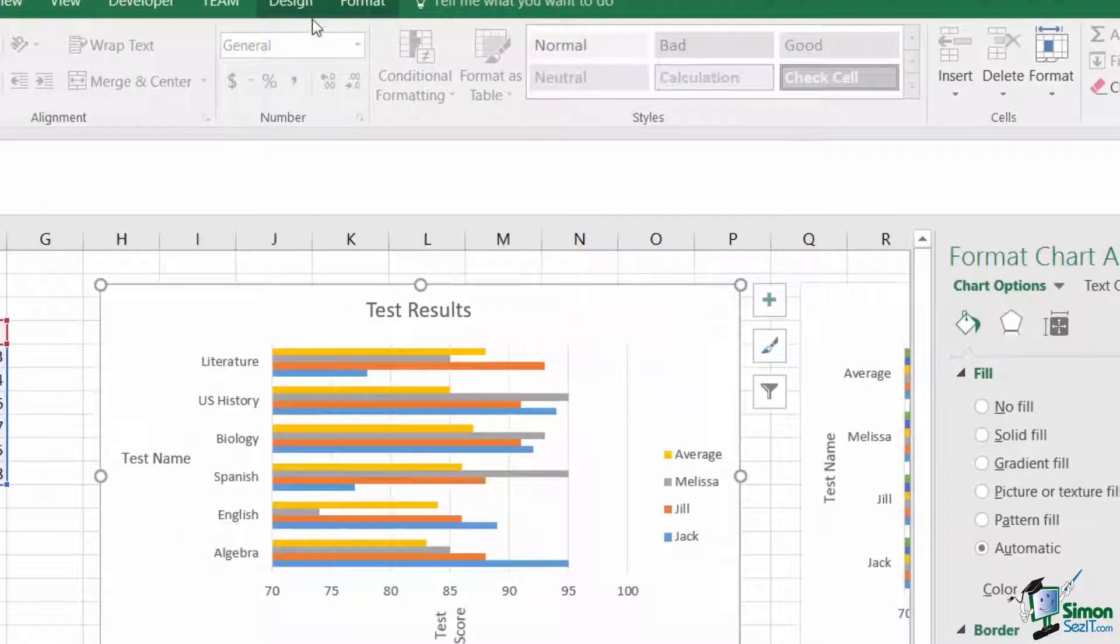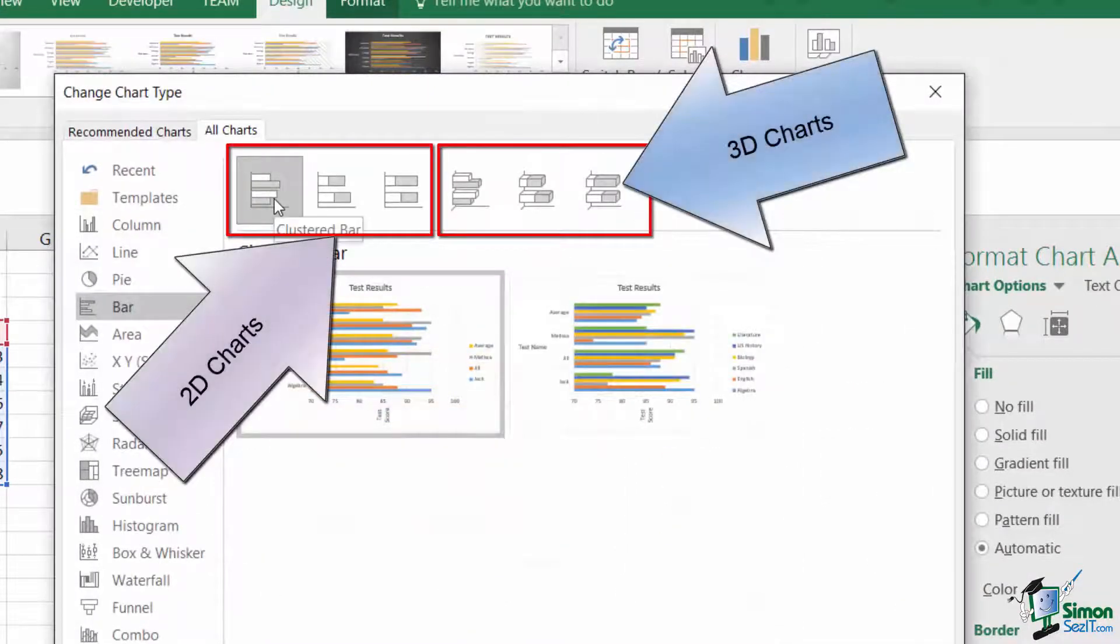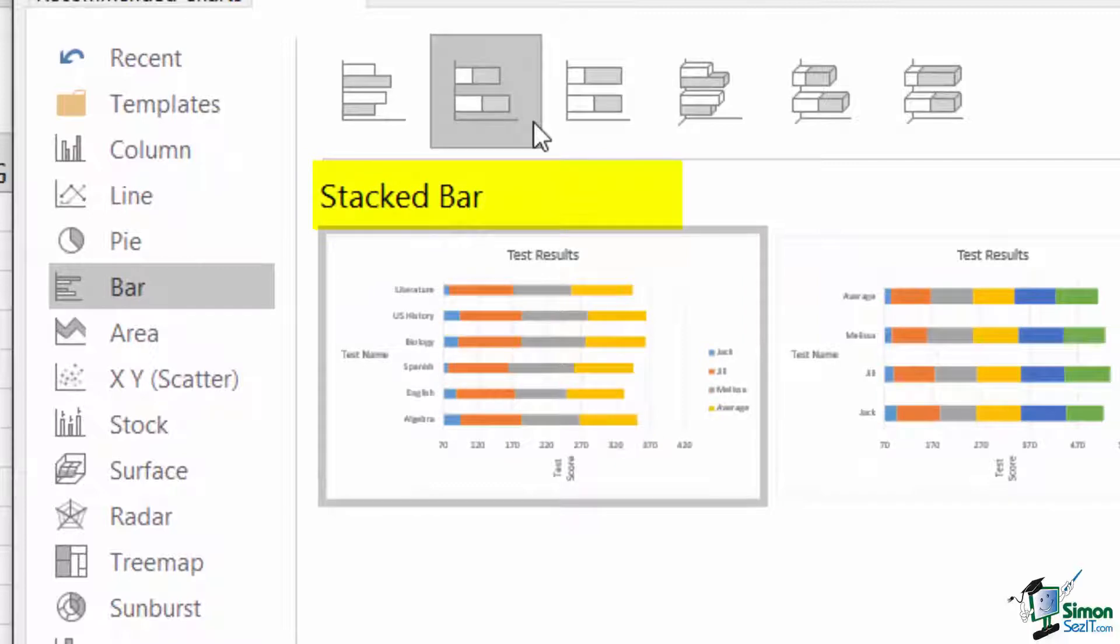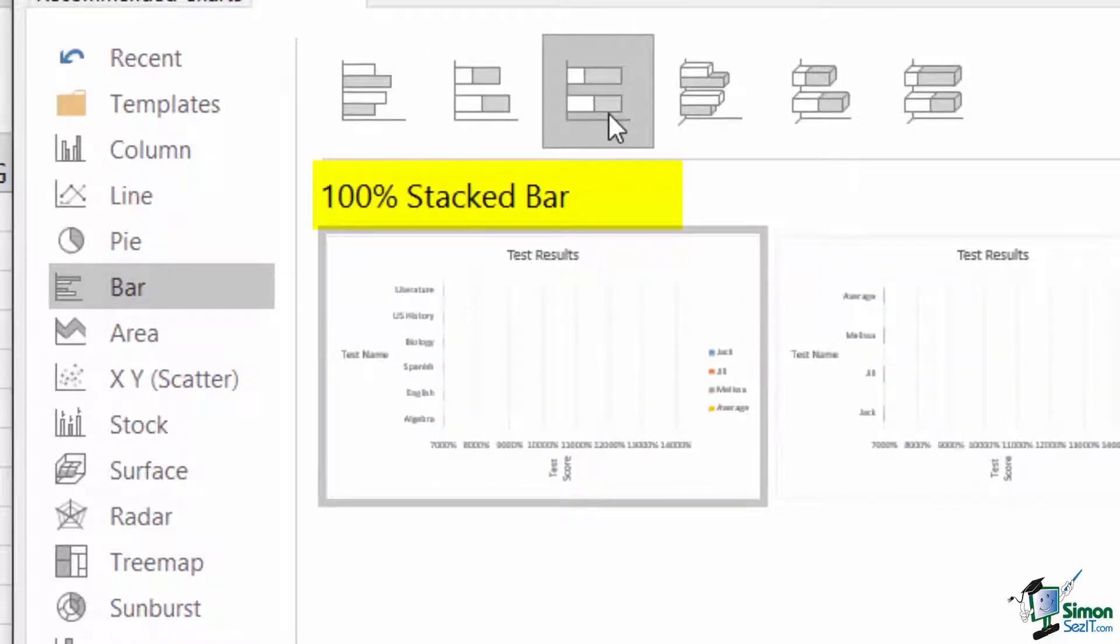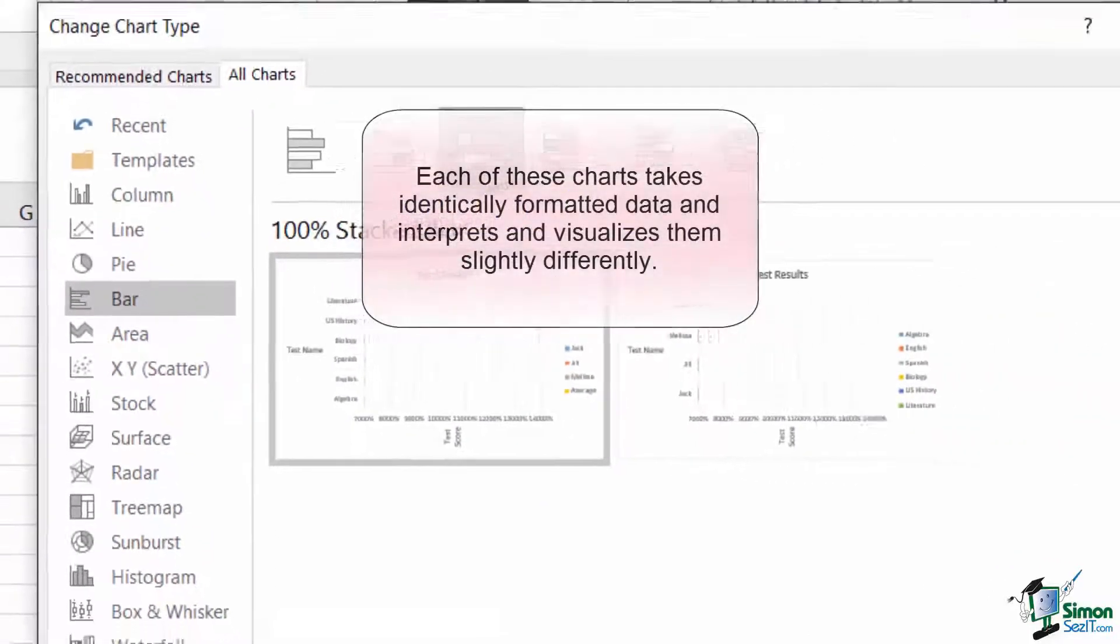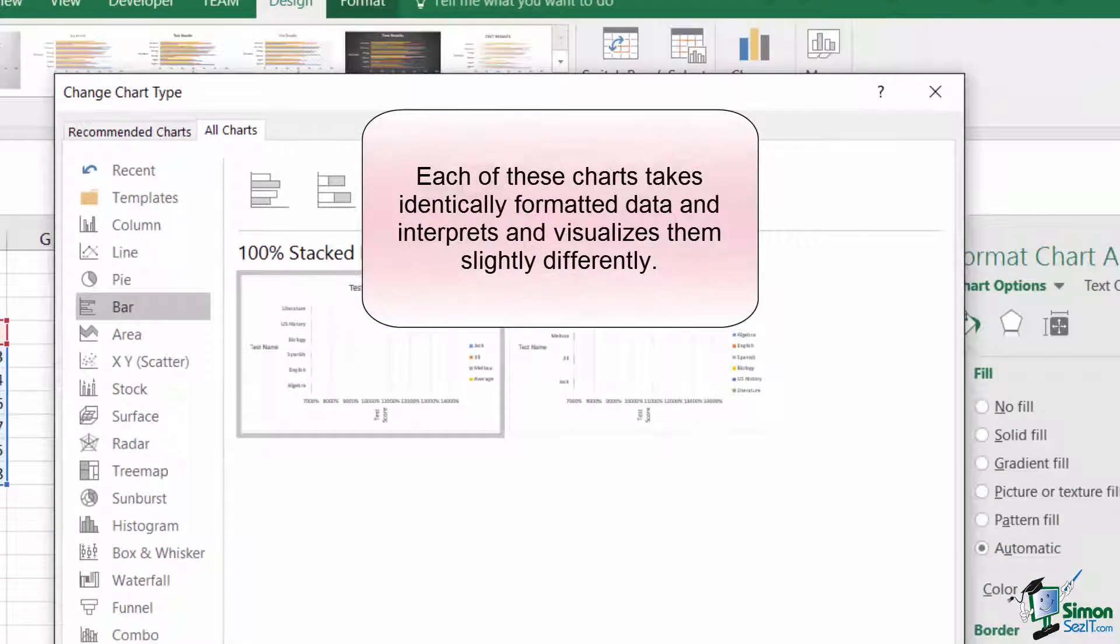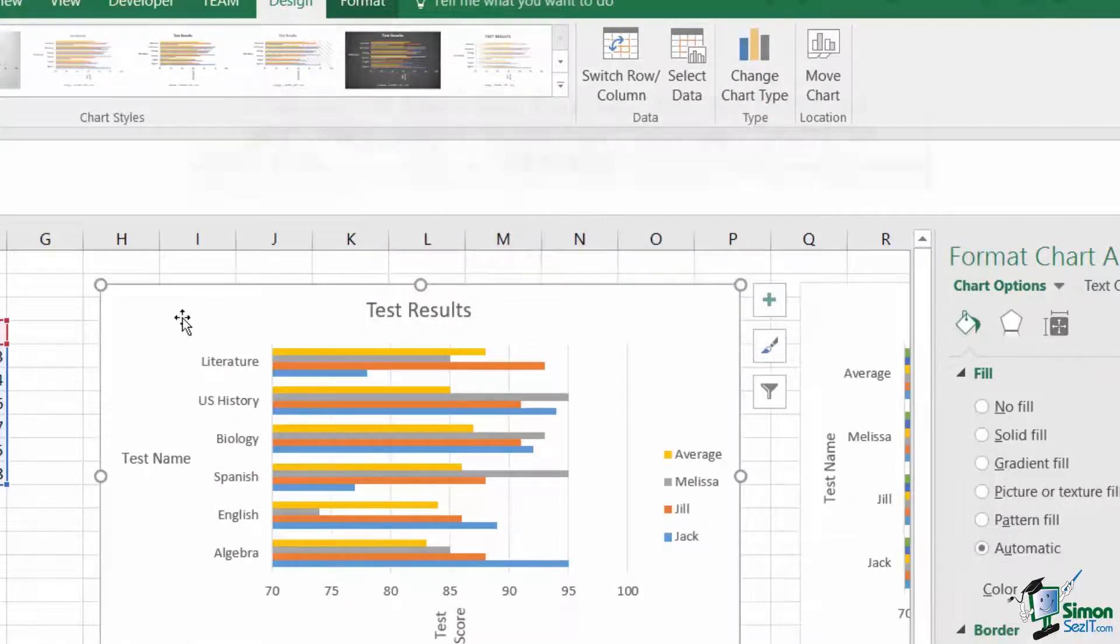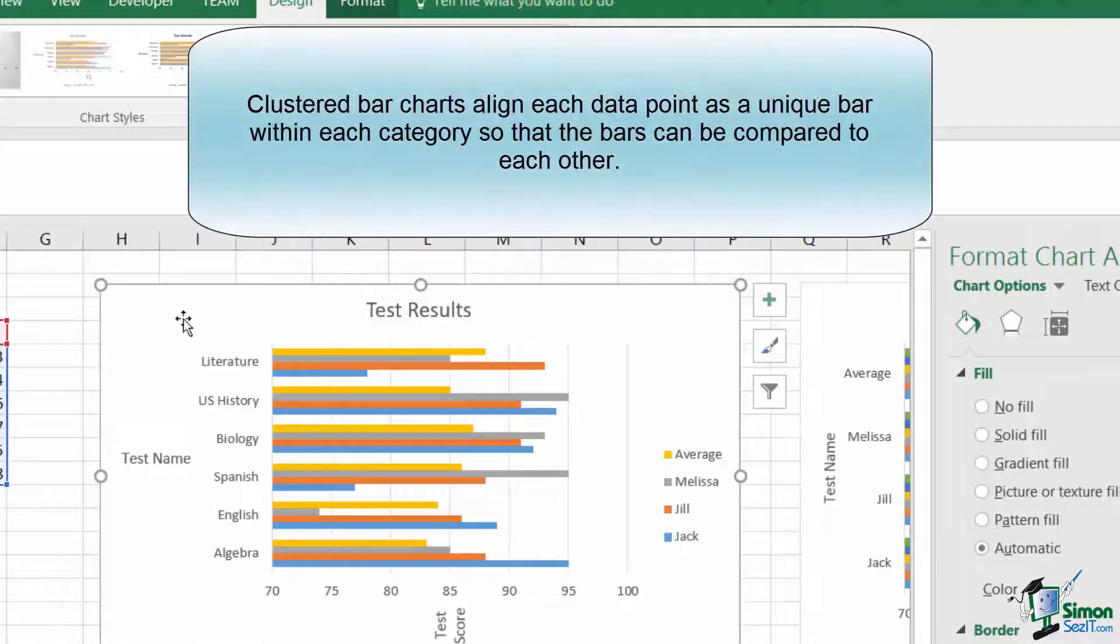Bar charts also come in a couple of different flavors. The type that we're using right now is of the 2D class. Within the 2D class, there are three types of bar charts: the clustered bar chart, the stacked bar chart, and the 100% stacked chart. Each chart interprets the series data slightly differently, so let's look at some different charts to understand what these differences mean. The chart we're looking at right here is a clustered bar chart, and it simply lines each data series up next to each other.